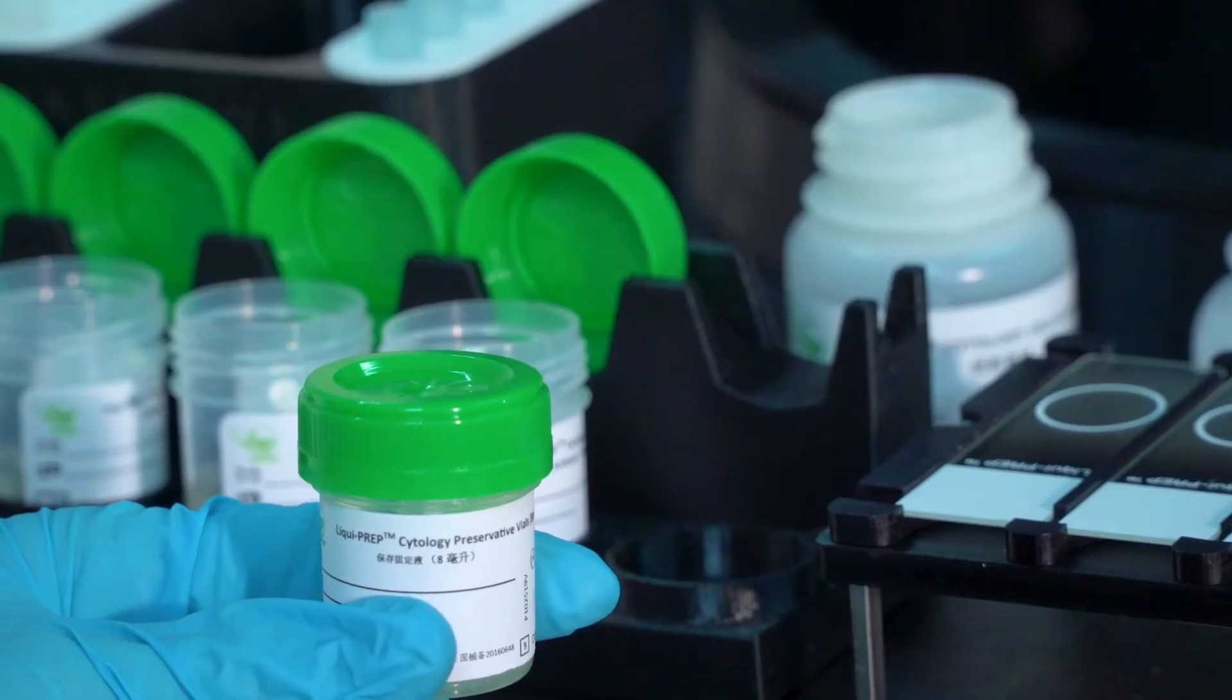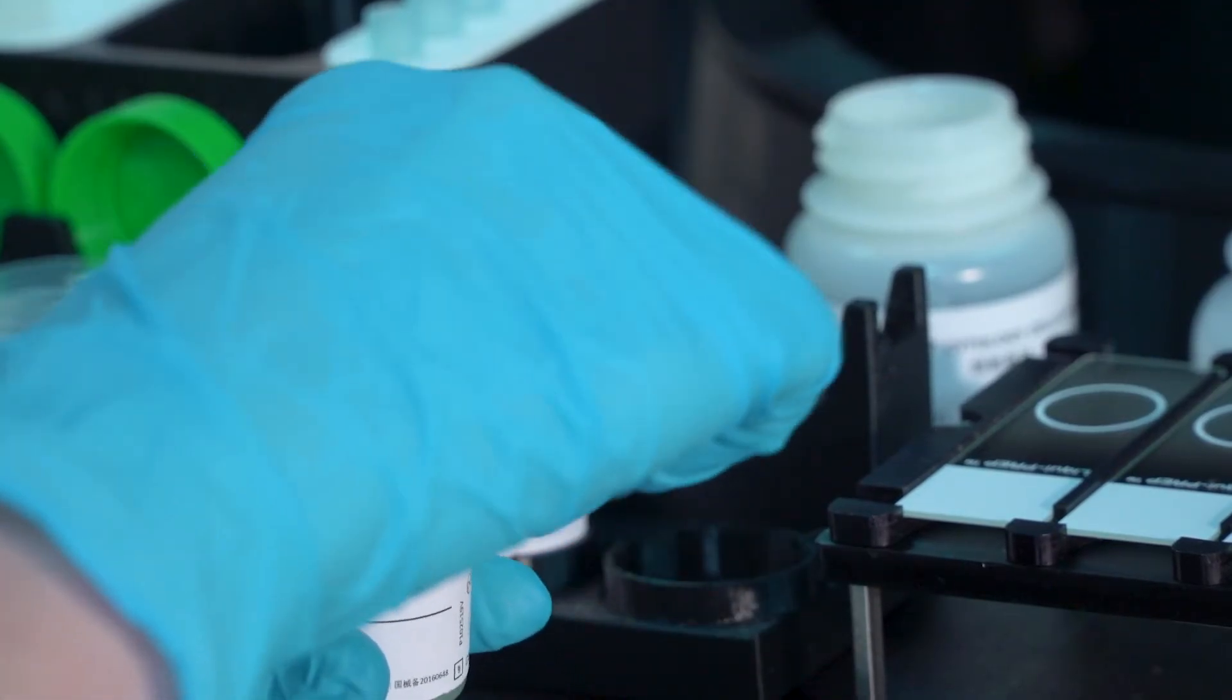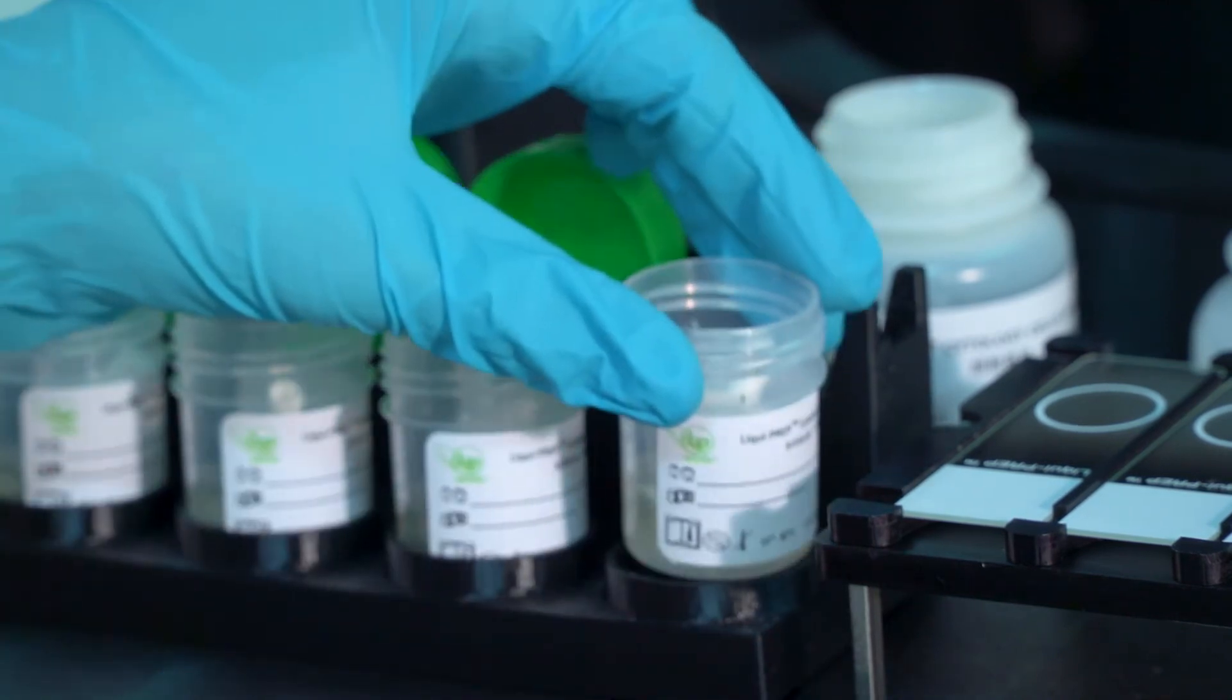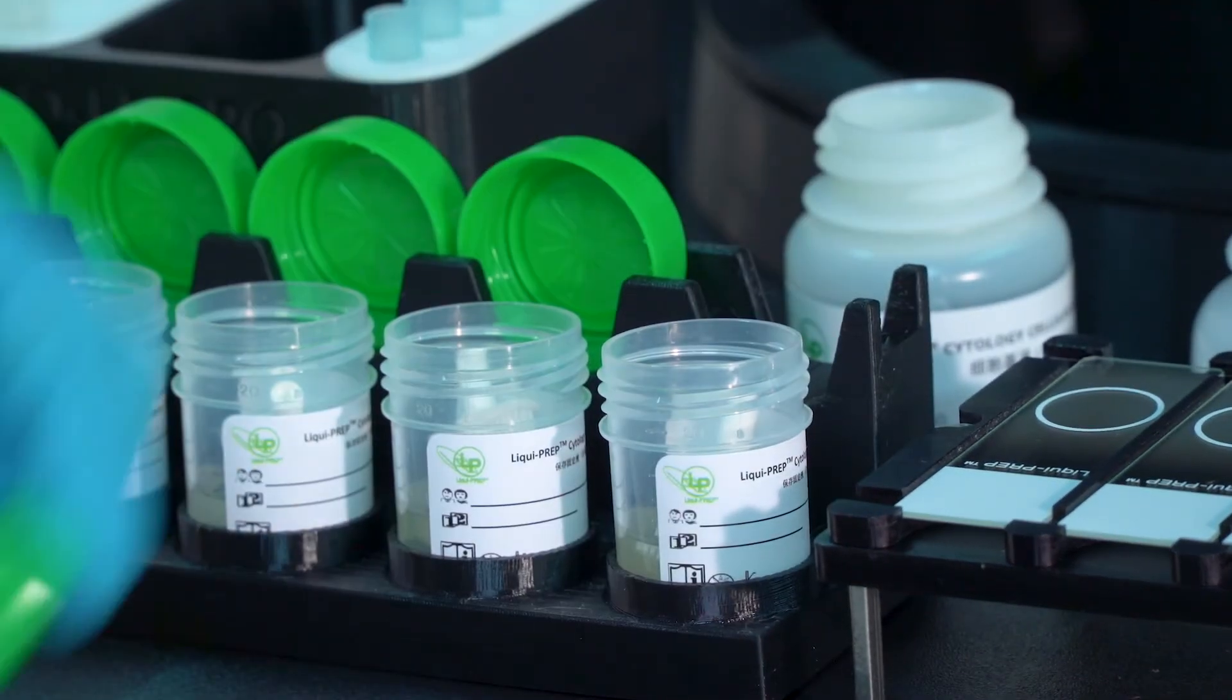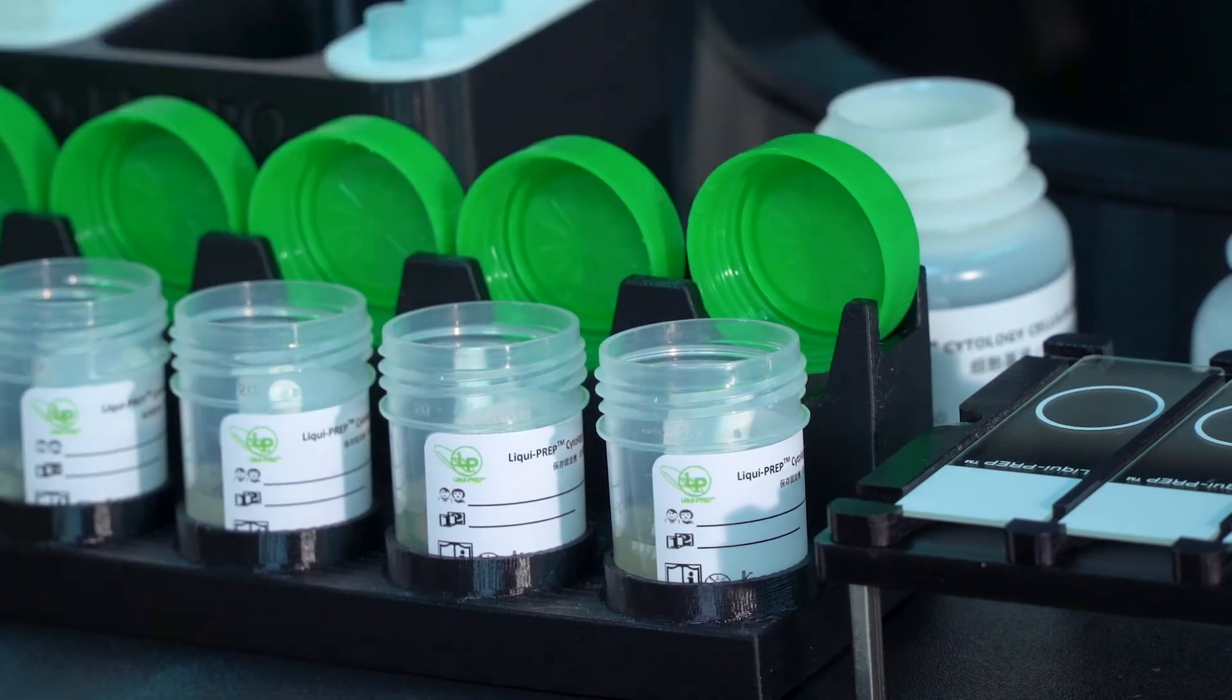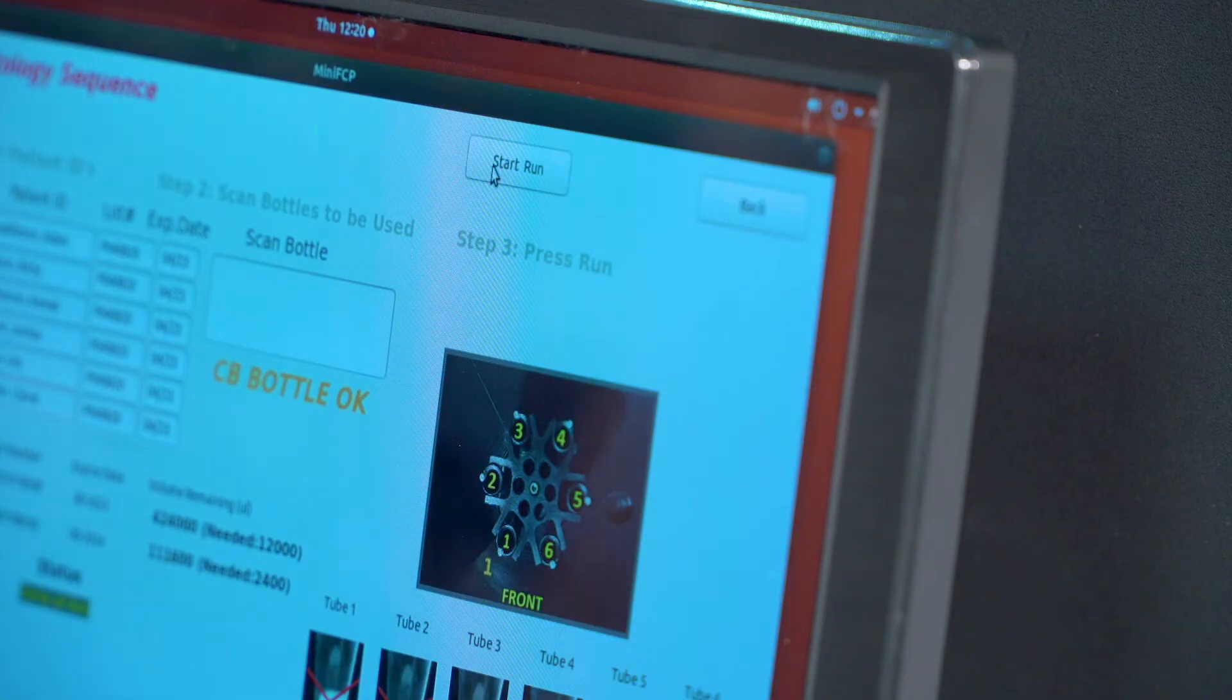Remove the specimen preservative vial lid, then place the open vial onto the AutoLP Pro specimen processing rack. The vial lid can be placed in the slot behind the corresponding vial. Press the run button.